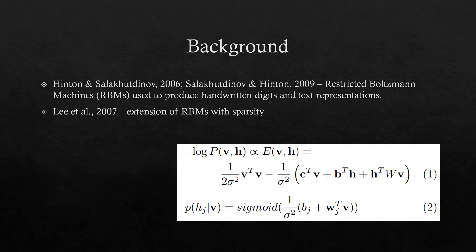The first equation represents the probability distribution. The second equation represents the conditional probability distributions when the visible or hidden variable is fixed.